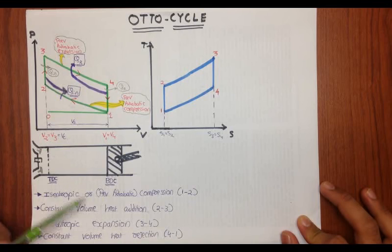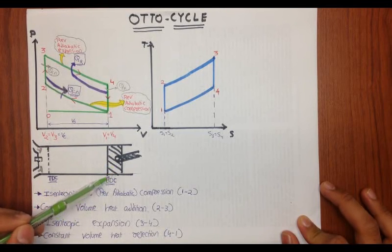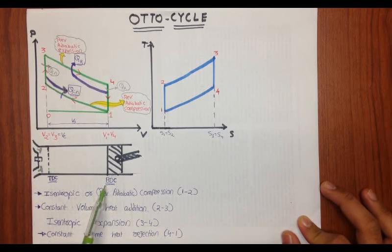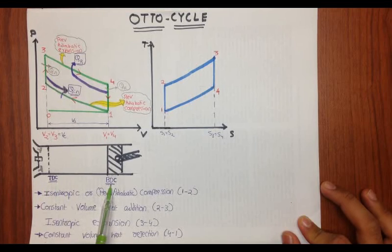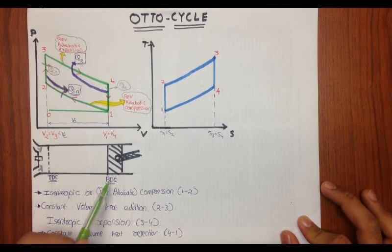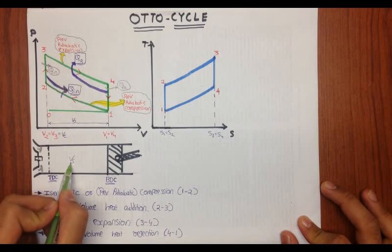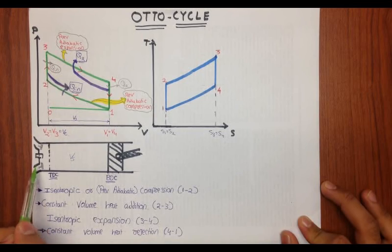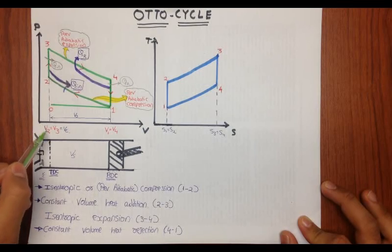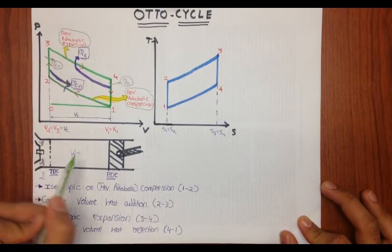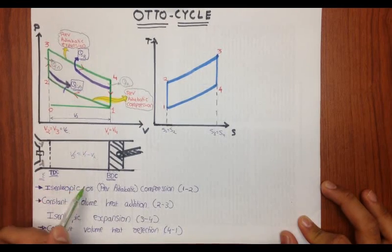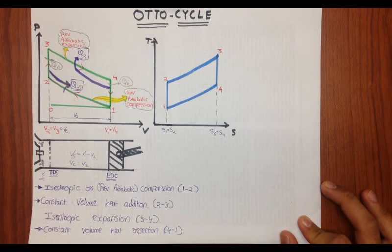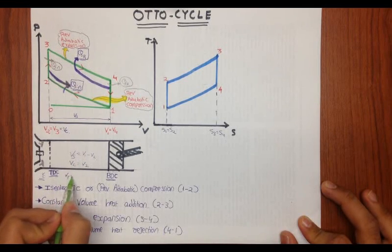Let us understand the figures. The piston is currently at the BDC (bottom dead center); the spark plug, intake valve, and exhaust valve are visible. The piston moves between BDC and TDC in each stroke. The volume between BDC and TDC is the swept volume Vs, and the volume between TDC and the cylinder head is the clearance volume Vc. From the diagram, Vs = V1 − V2 and the total volume equals V1.